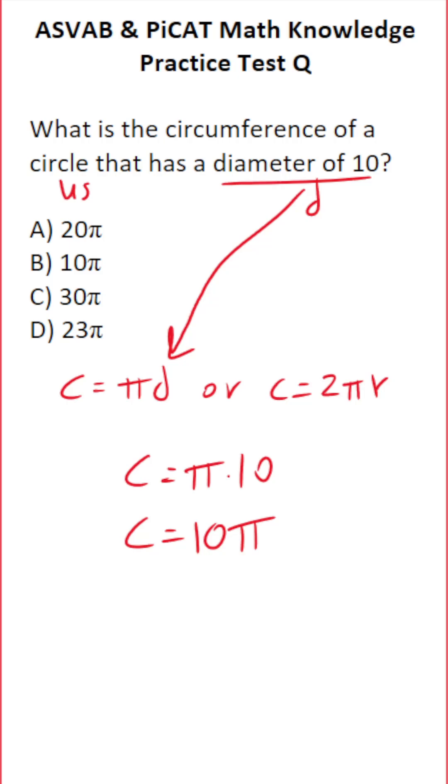Now, if this said use 3.14 for pi, we would actually have to multiply this one out. That said, you can see the answer is there as B, 10 pi.